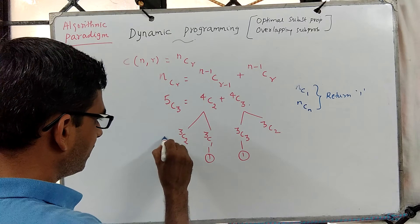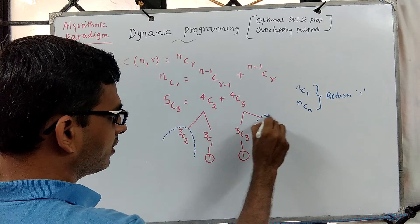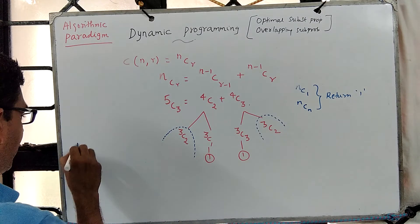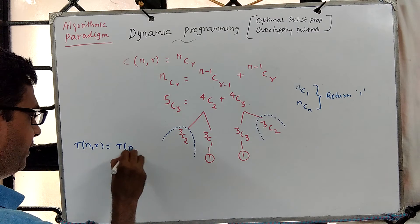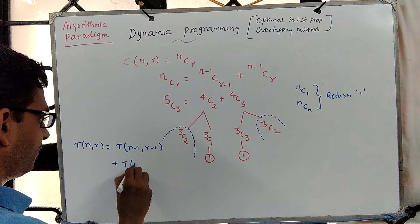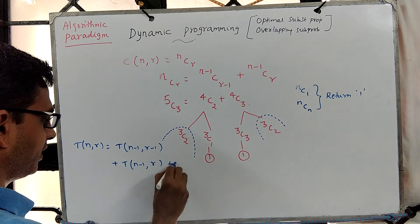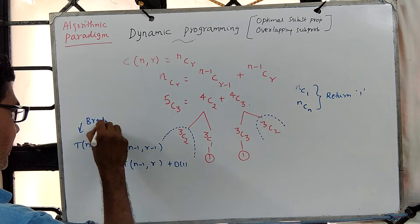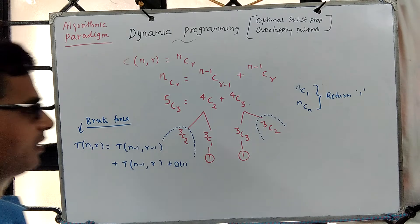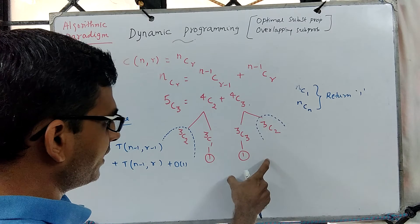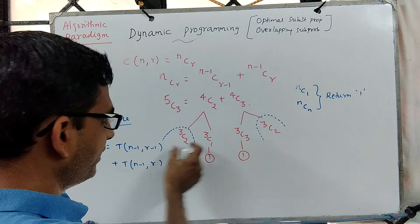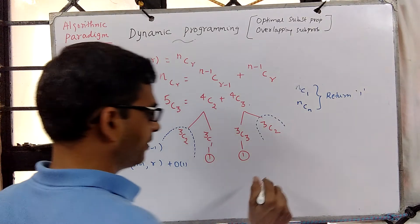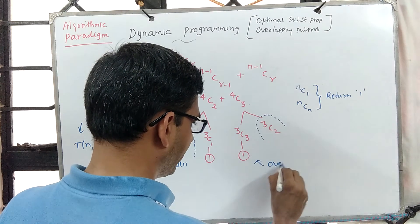Subtrees in the NCR recursion clearly overlap. The brute force recurrence T(n, r) = T(n-1, r-1) + T(n-1, r) + O(1) gives exponential complexity in n and r. But if we exploit overlapping subproblems by computing each subproblem exactly once, we achieve polynomial effort. Again, we are not optimizing anything — this is purely a candidate for the overlapping subproblem property.